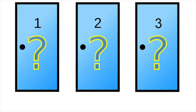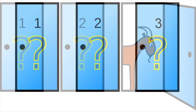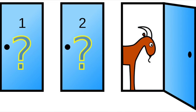You choose a door. Before that door is opened, however, Monty opens one of the two other doors with a goat behind it. He then gives you the option of switching to the other closed door.